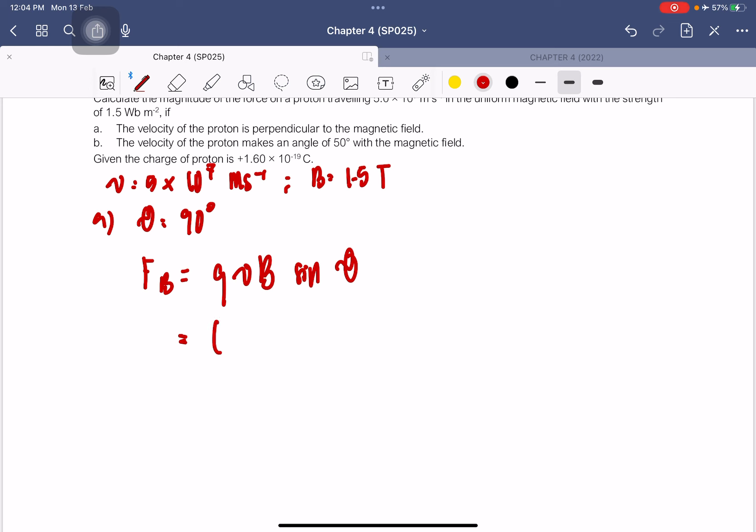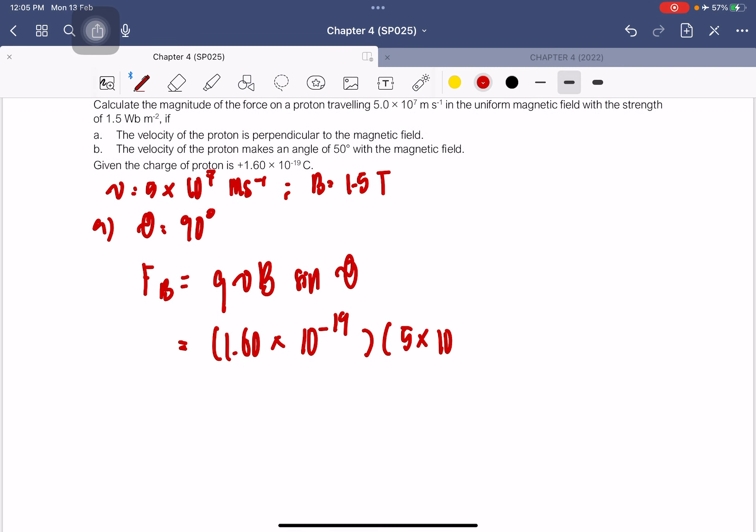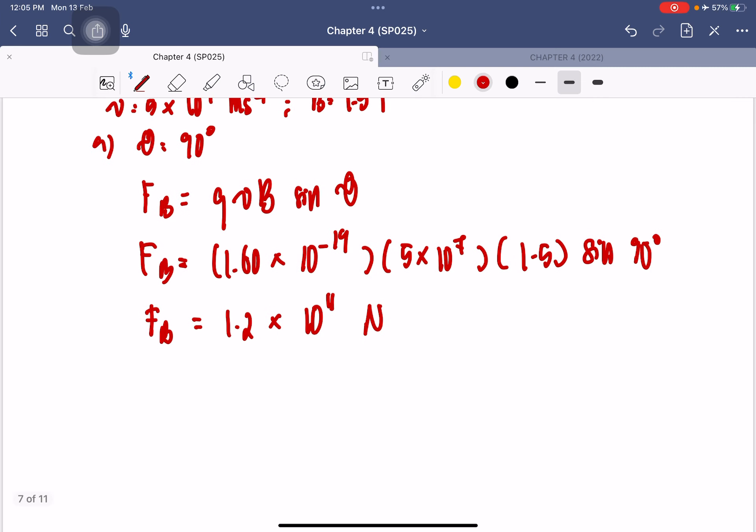Q is the charge of the proton, which is 1.6 × 10^-19. Velocity is 5 × 10^7. B is 1.5 tesla, sin 90 degrees. So the magnetic force is equal to 1.2 × 10^-11 newton.